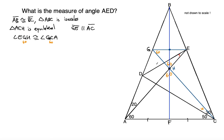That tells you that triangle GEH is equilateral, and that means this missing angle is also 60 degrees. Part of that 60 degree angle is the angle that we're trying to find, AED. So we're getting closer and closer — we have to work with a cluster of angles to eventually get to this small angle.